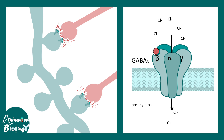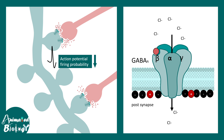As a result of too much chloride ion getting in, the action potential firing probability is decreased at the post-synaptic level. Looking at the post-synaptic membrane, it becomes slowly more negative — that means hyperpolarized — leading to a reduced possibility of firing an action potential.